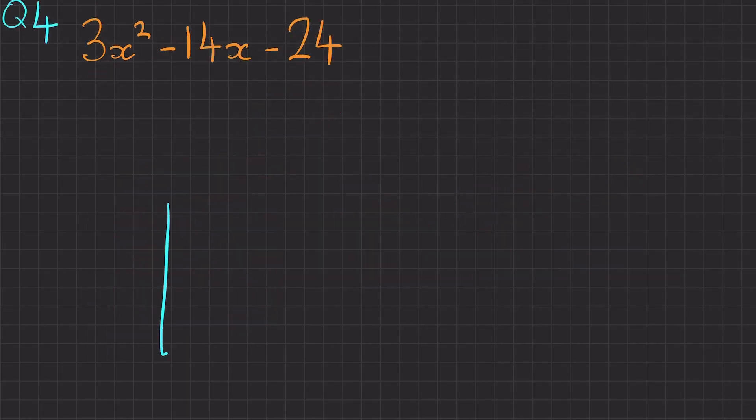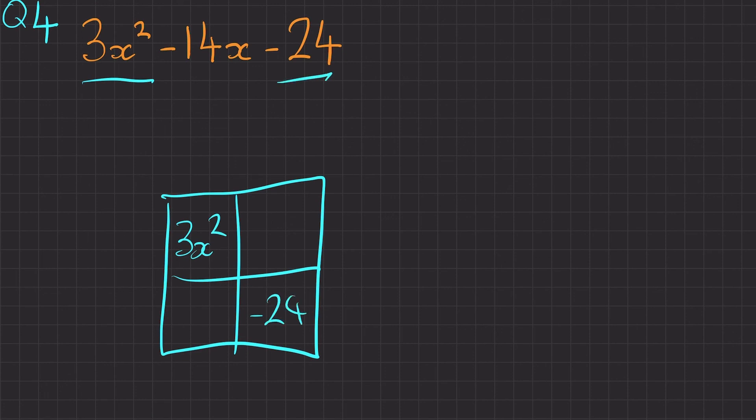Finally, for this one, we've got 3x squared. So 3x squared and minus 24. So I'm going to put 3x there and x there. And we need something for these two to end up being minus 14. Well, if we try a few things out, I've done this before as well. So this is going to be plus 4x minus 18x to get minus 14. So our final answer will be 3x plus 4 and x minus 6.